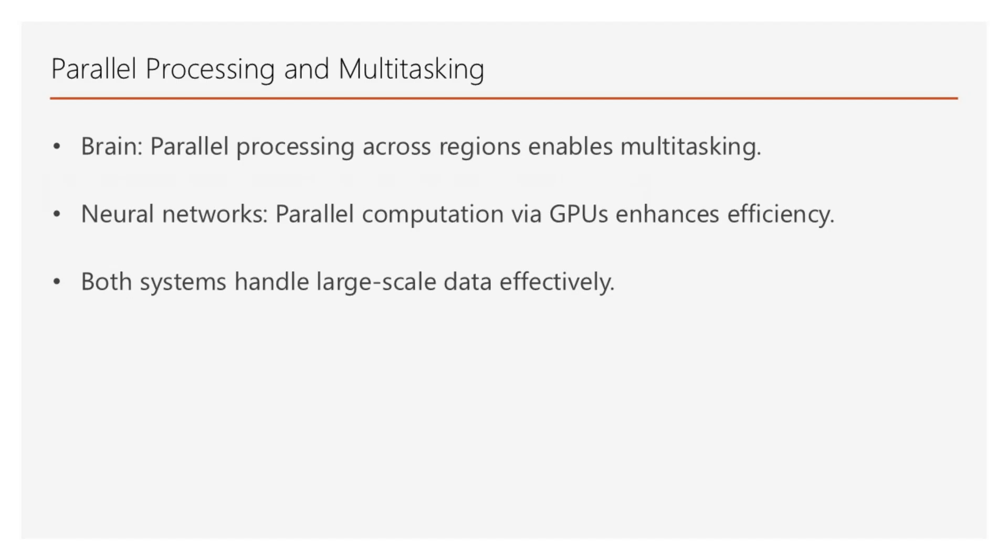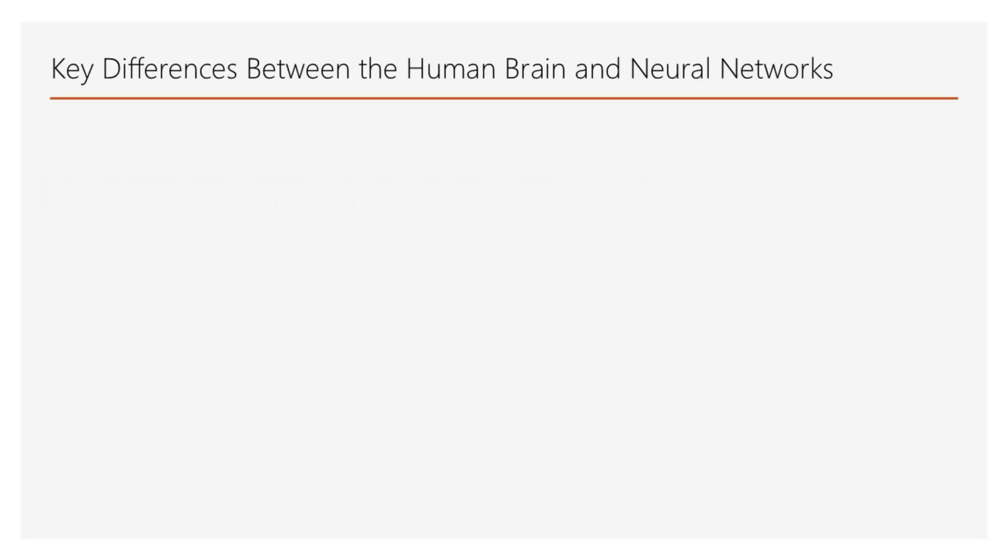When it comes to multitasking, the brain processes information in parallel, allowing multitasking across different regions. Neural networks also utilize parallelism, particularly in GPUs, to handle vast amounts of data efficiently. While by now we have talked about many similarities between the human brain and neural networks used in AI systems, after all neural networks were inspired by the human brain, there are also some key differences besides capacity differences. Let's talk about them in the next slide.